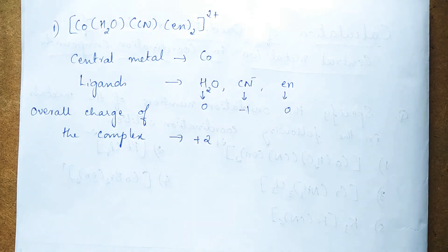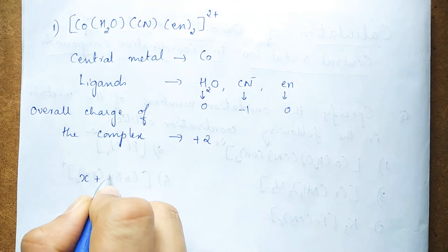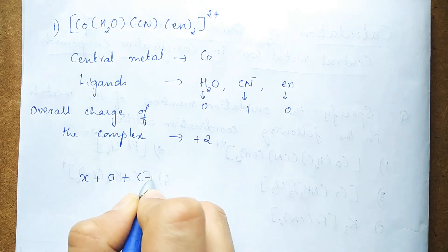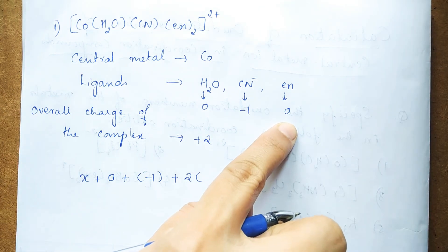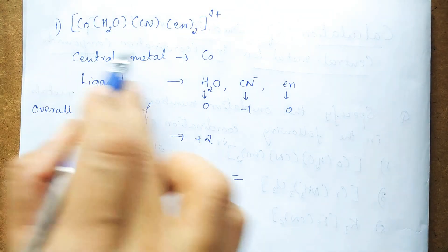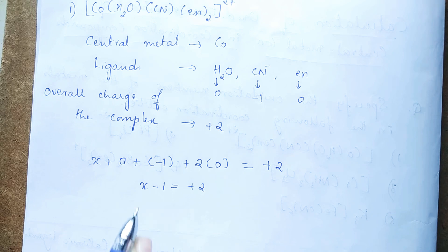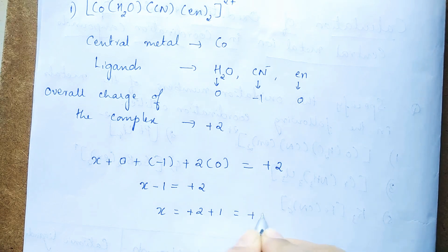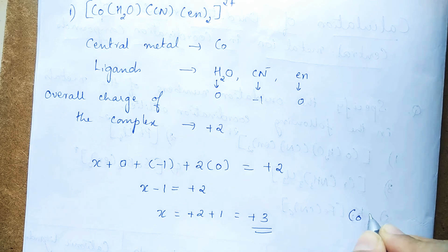Taking the oxidation number of cobalt as X: X + (charge of H₂O = 0) + (charge of CN⁻ = −1) + 2×(charge of en = 0) = +2. So X − 1 = +2, therefore X = +3. Cobalt exists in the +3 oxidation state in this complex.